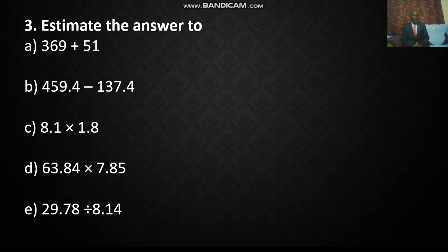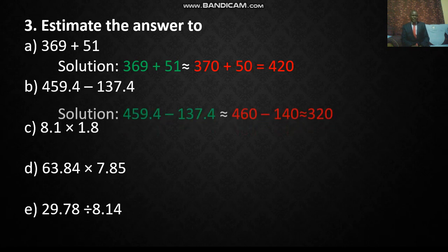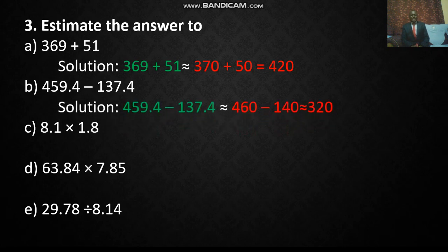We also have estimate the answer. In estimation we estimate then compute, then we shall have estimated the answer. So in this case 369 becomes 370 and 51 becomes 50. So you add, it becomes 420. And then we also have 459. In this case it becomes 460. And then 137 becomes 140. You subtract to get 320.